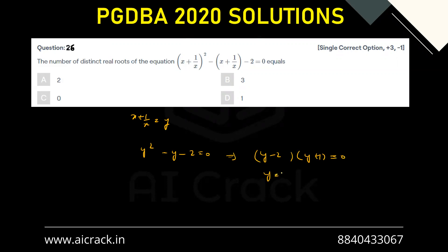So y is either 2 or y equals to -1. Now y is basically x + 1/x, and we also know that with the help of AM-GM, x + 1/x is either greater than or equal to 2.